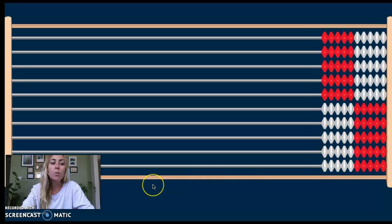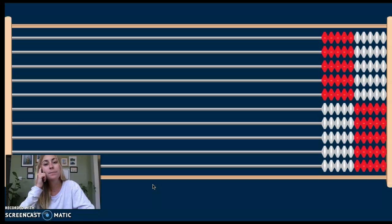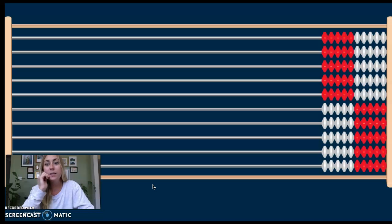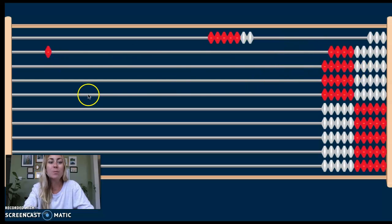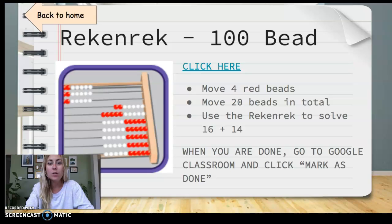What do you notice about this Rekenrek? Think in your brain. Some of the beads are red, some are white — I think some of you said half and half. Now I want you to explore with this tool. Explore and practice dragging some beads over. When you're done exploring, you can follow these prompts right here on your Rekenrek.